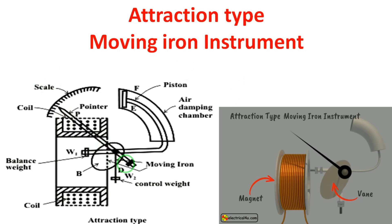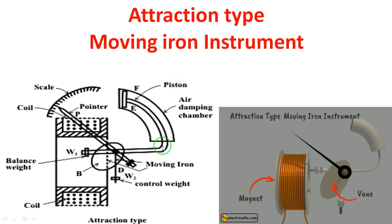In this instrument, we have three torques. First is the deflecting torque — this moves the pointer across the scale. Second is the control torque, which has two types: spring control torque and gravity control torque. We use a control weight and a balancing weight for gravity control. Third is the damping torque, which has three types: air friction damping, fluid friction damping, and eddy current damping. In this diagram, air friction damping and gravity control are used.